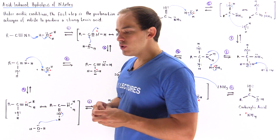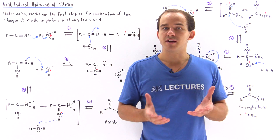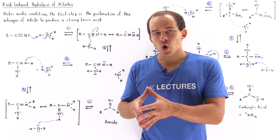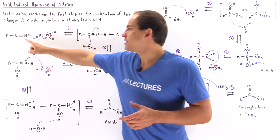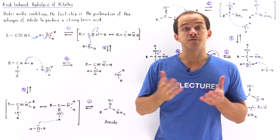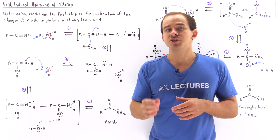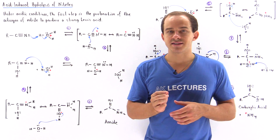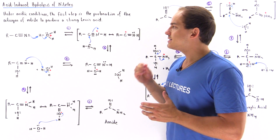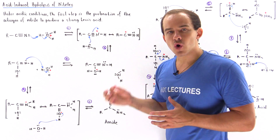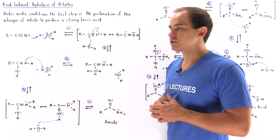In step number one, our nitrile compound is mixed with hydronium and water. The hydronium reacts with the nitrile, protonating the nitrogen of this nitrile compound to form a resonance-stabilized intermediate that is a strong Lewis acid. The entire purpose of step number one is to create a strong enough Lewis acid that can react with the water molecule.